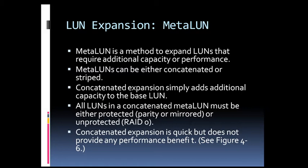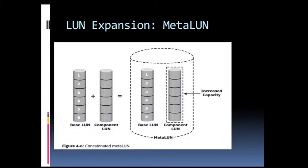However, a RAID 0 LUN can only be concatenated with another RAID 0 LUN, since it uses only striping with no parity or mirroring. Concatenated expansion is quick but does not provide any performance benefit. As shown in the figure, the concatenated MetaLUN has a base LUN plus a component LUN, where the component LUN represents the increased capacity.